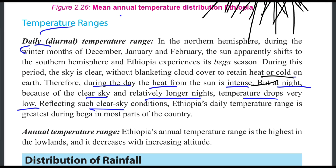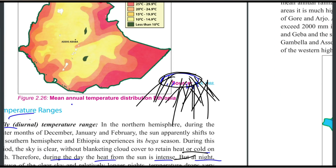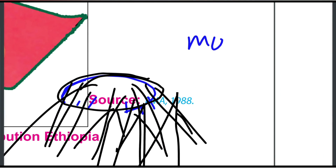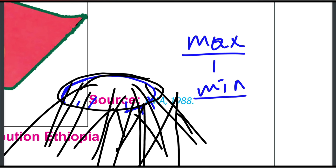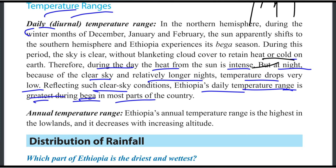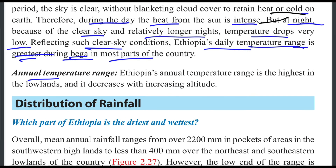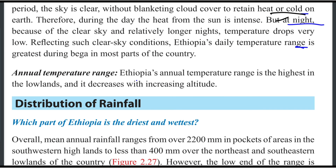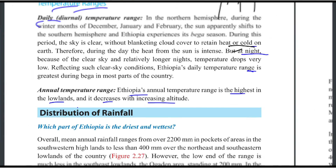Reflecting such clear sky conditions, Ethiopia's daily temperature range is greatest during Baga in most parts of the country. Ethiopia's annual temperature range is highest in the lowlands and decreases with increasing altitude.